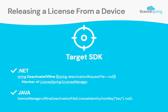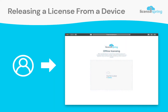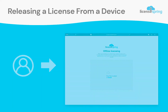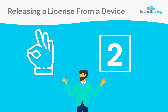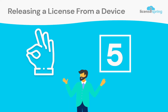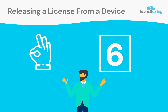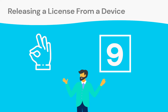In order to update the status of the license in the LicenseSpring database, the end user should upload the request file to the offline portal. If successful, the record for that license will increment the number of possible activations for that license.